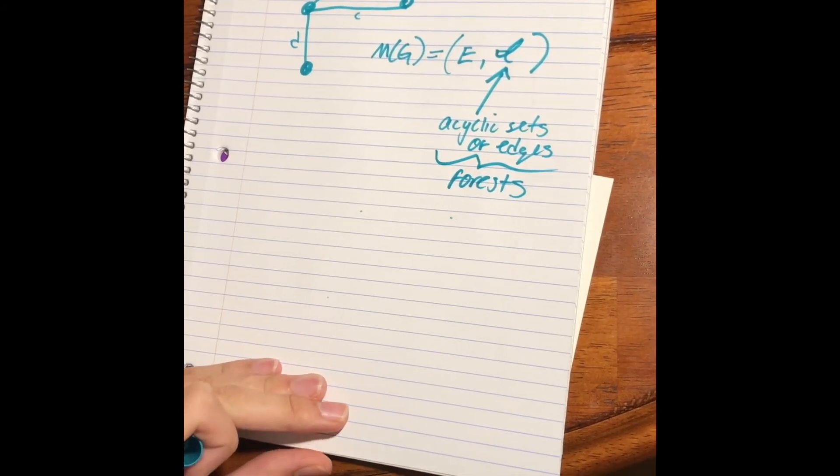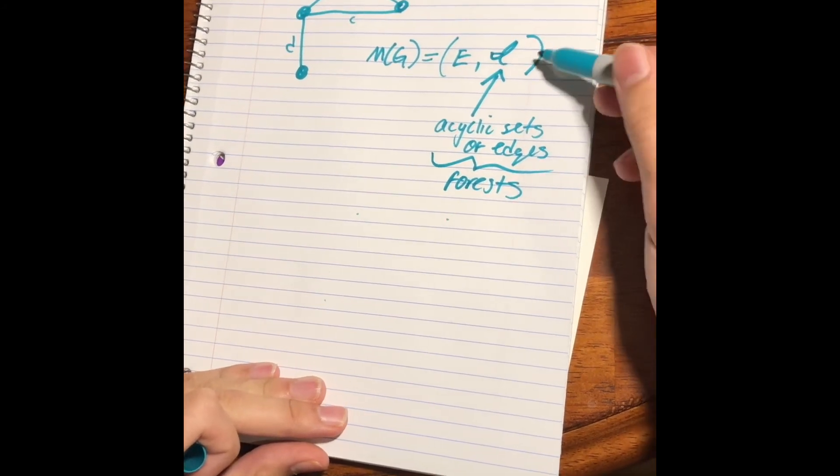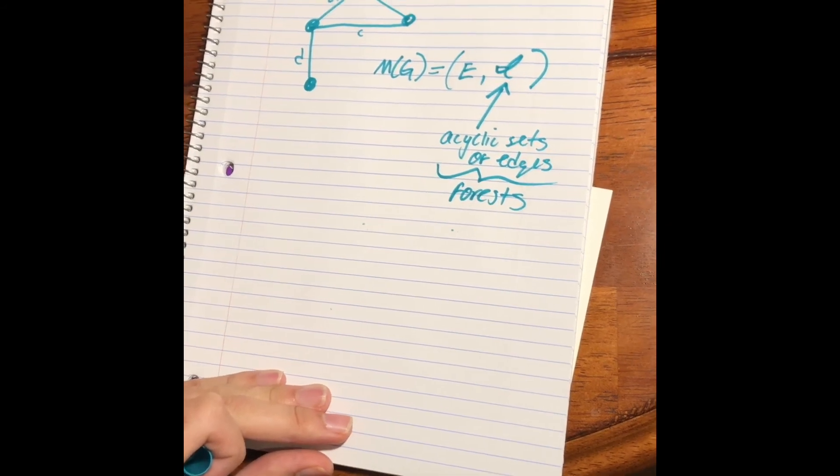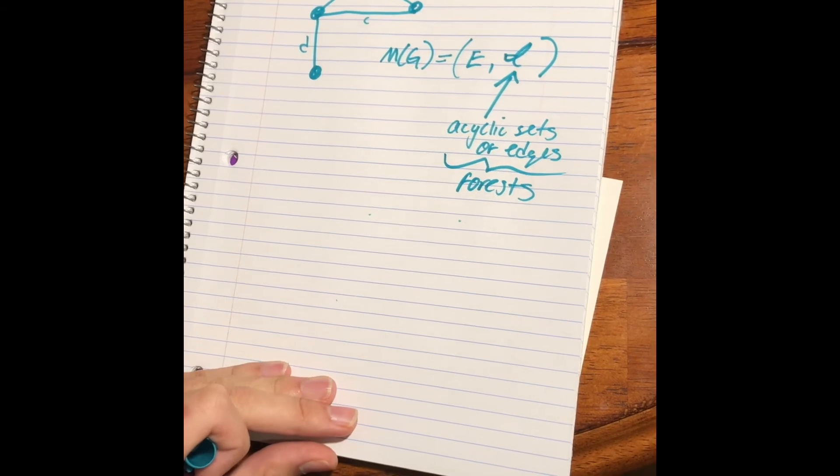And that's why all graphs are, in fact, also Matroids. This Matroid, defined in this way, where the independent sets are acyclic sets of edges, or the forests of the graph, is going to give you a graphic Matroid.